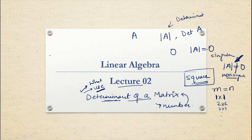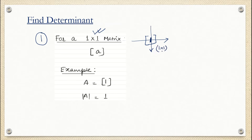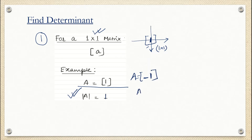Now we are going to see how to find the determinant of a square matrix. The very first type is a 1×1 matrix. For a 1×1 matrix, there is only one row and one column, so only one element will be present. If the matrix has only one element, the determinant will be the same as that element. Don't get confused — determinant can be negative also. Suppose matrix A has element minus one, so the determinant will be minus one. Determinant can be zero, negative, or positive.